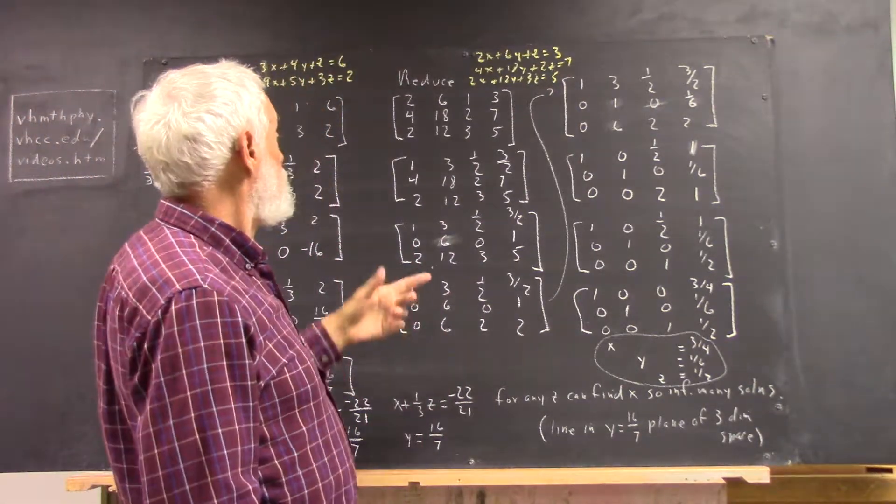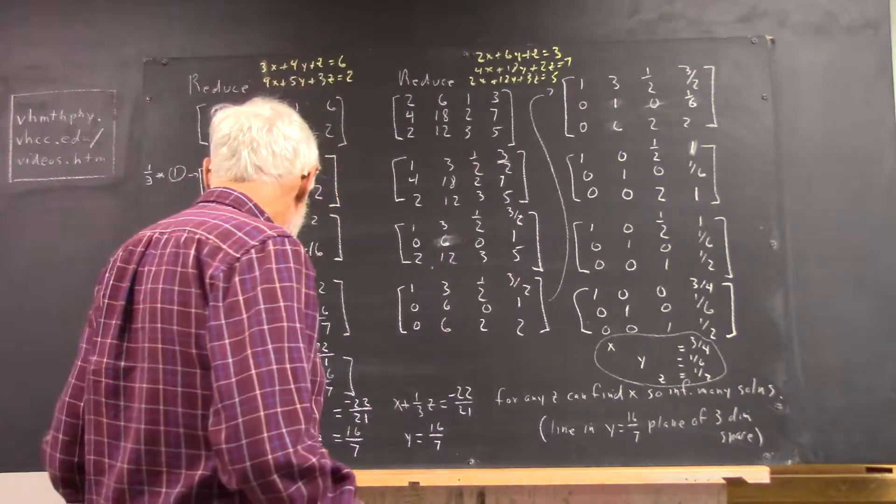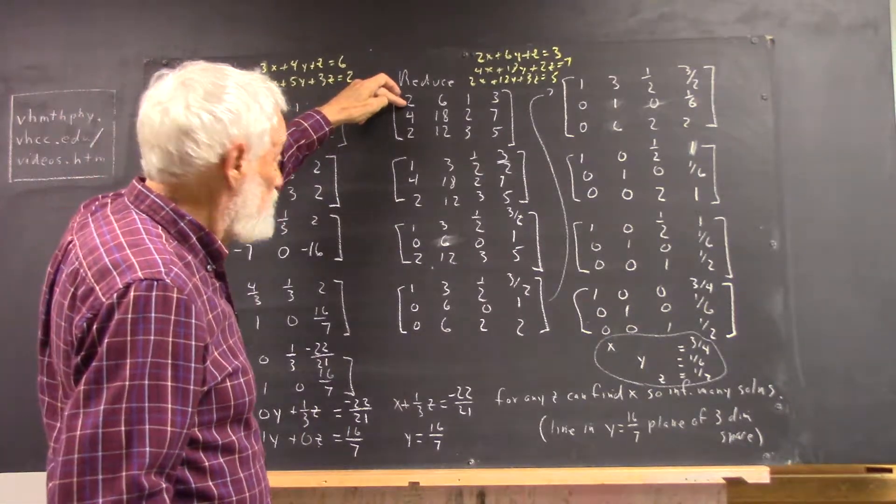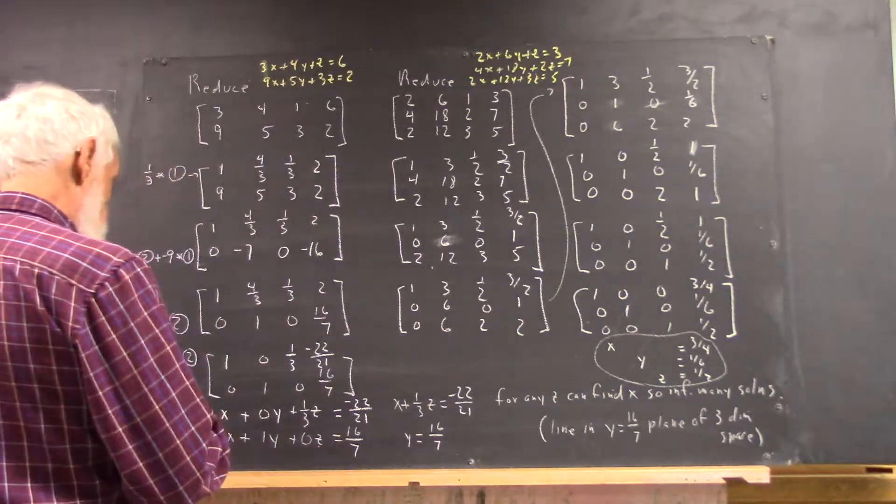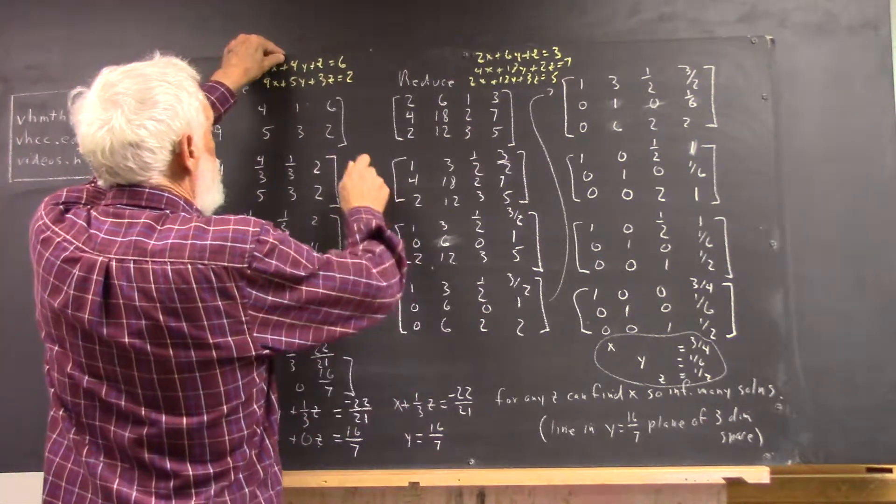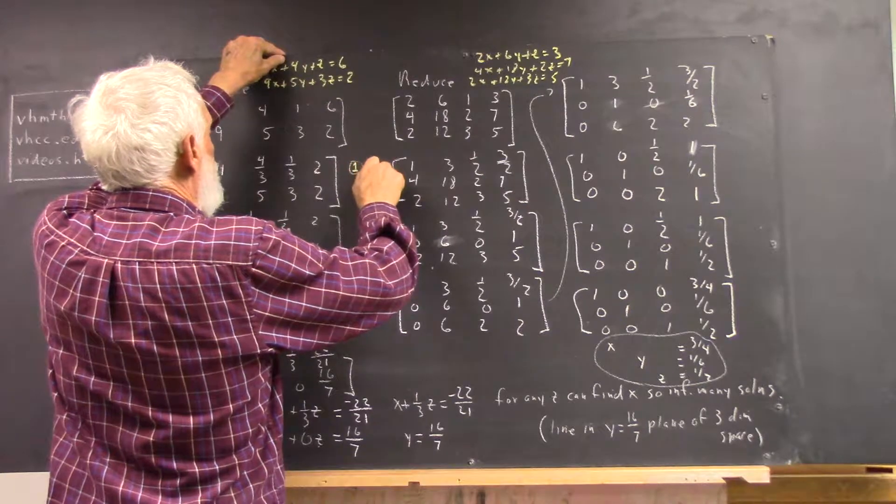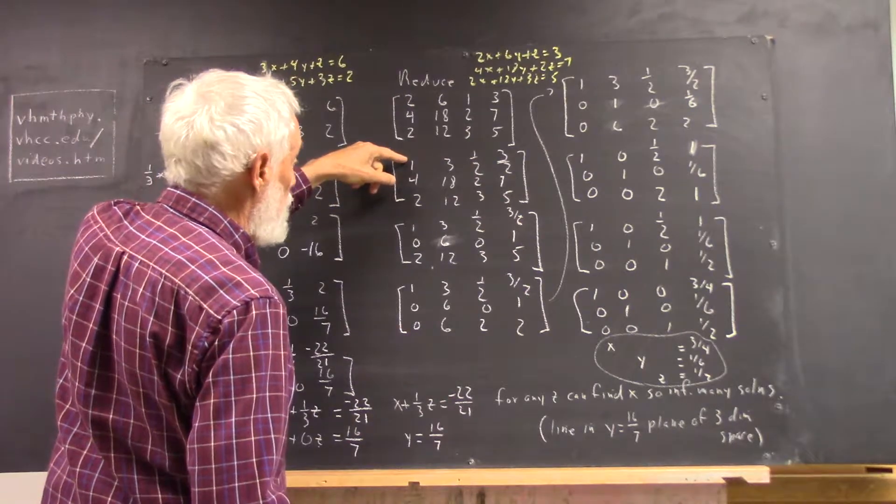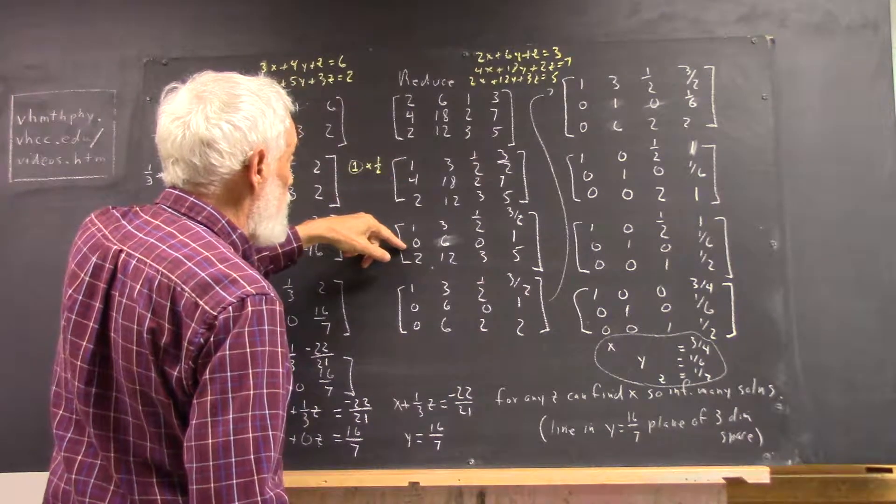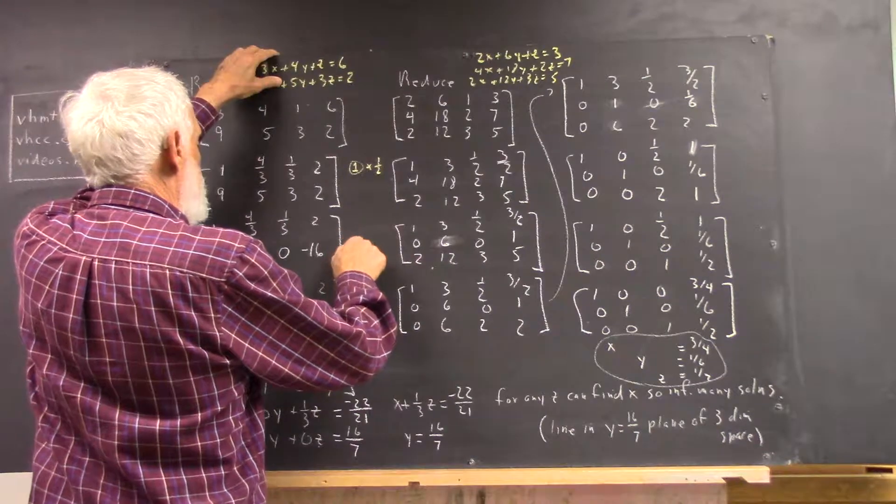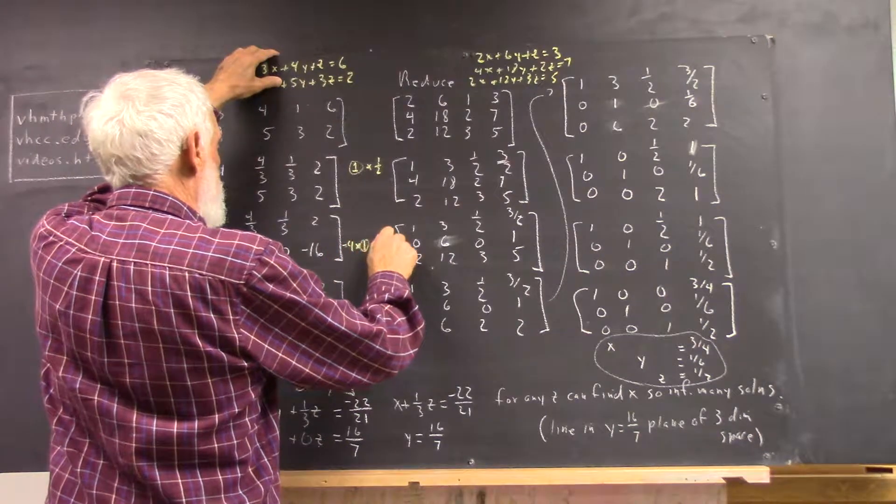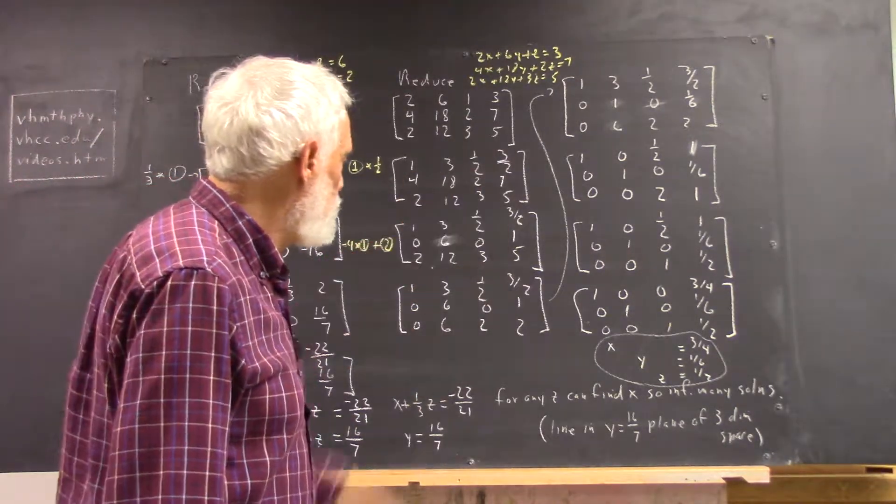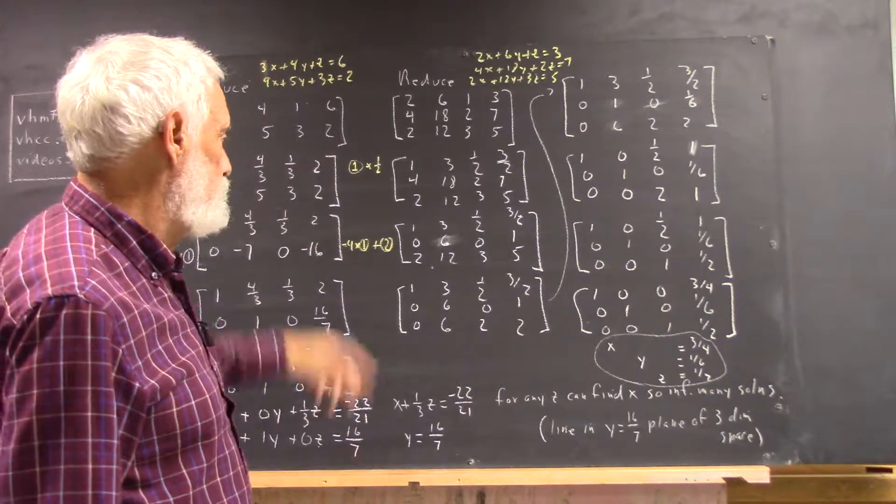Now, I've just written out what we get. So what I do first, I want to get a 1 here. It's much easier to deal with in most cases. So I do the first equation times 1 half. Then, I add negative 4 times the first equation to the second. And I get this. And so far, everything is just the same as it'd be if this was just a 2x2 or 2x3 matrix.